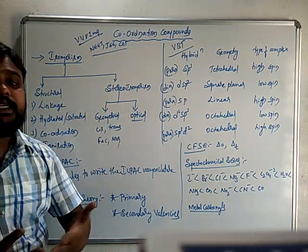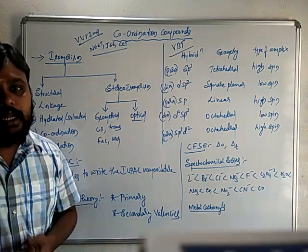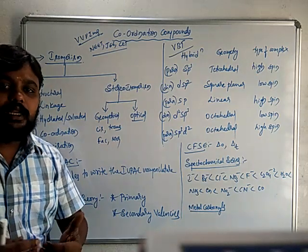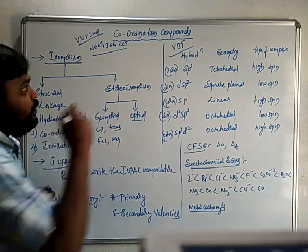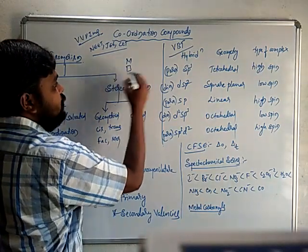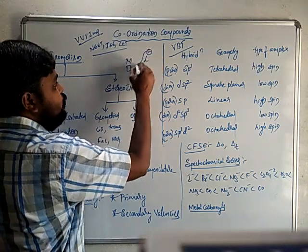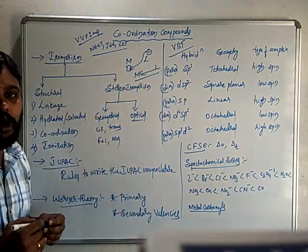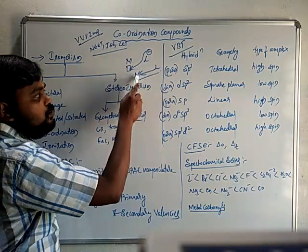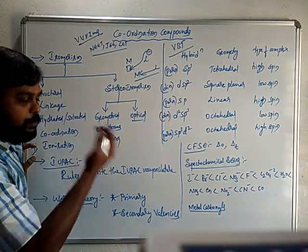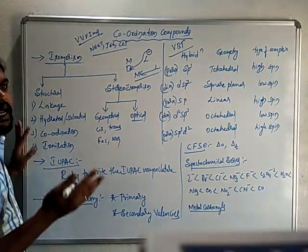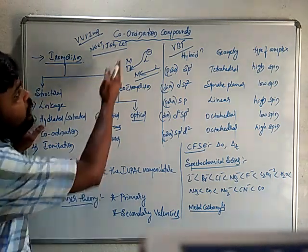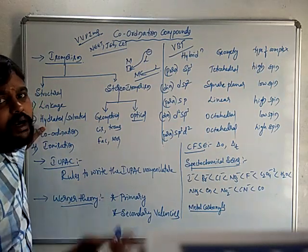Coordination Compounds are compounds which mainly contain a Coordination Bond, also called a Dative Bond. This bond involves two types of atoms: one metal and one non-metal. The metal has vacant orbitals, and the ligands donate a pair of electrons to those vacant orbitals, forming a metal-ligand or ligand-to-metal Dative Bond. Just as ionic compounds contain ionic bonds and covalent compounds contain covalent bonds, compounds containing Dative Bonds are called Coordination Compounds.